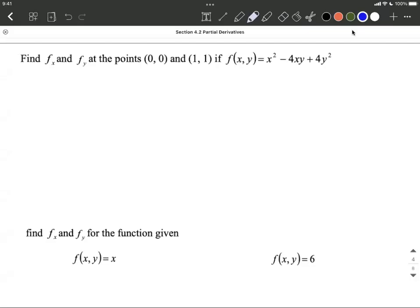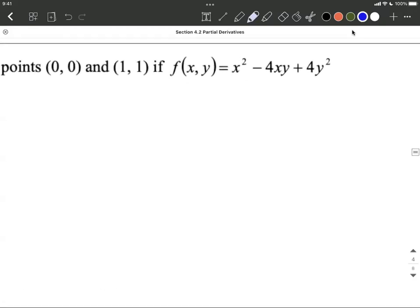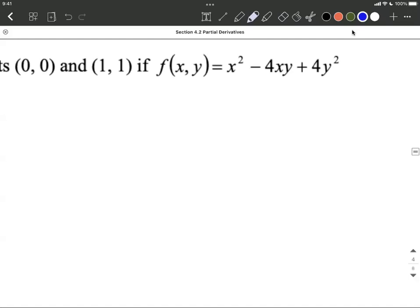Okay, we're going to find some partial derivatives and then evaluate them at some given points. The points are (0,0) and (1,1). But before we actually evaluate them, we have to find these partial derivatives.